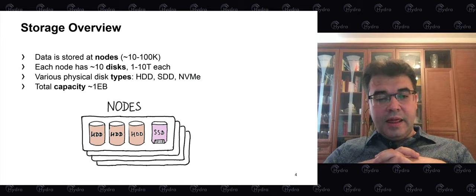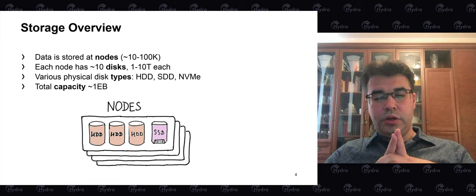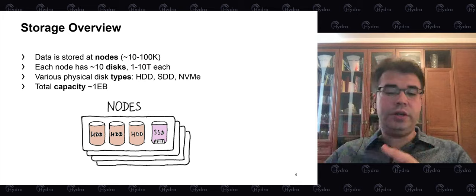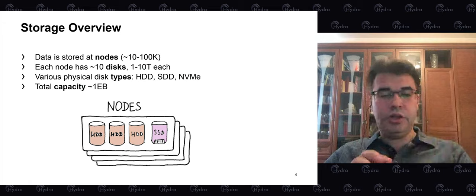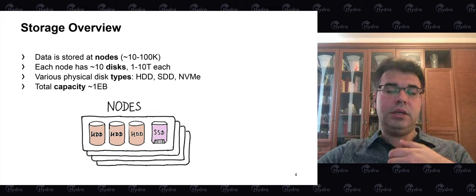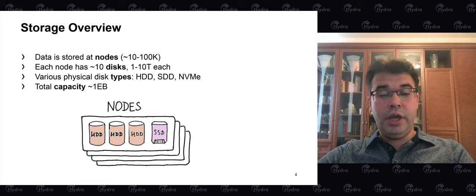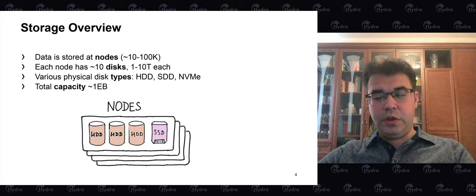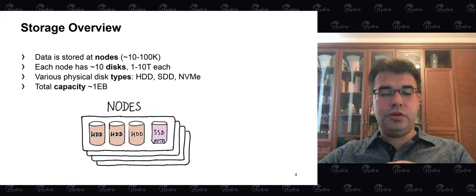Our high-level design is pretty standard. Data is stored in the cluster, which consists of nodes — server machines with a number of disk drives attached. Typically we have about 10 drives per node, each ranging from 1 to 10 terabytes in capacity. In YT we have HDDs, SSDs, and NVMe drives, and clients can choose which storage medium they need. Our largest production clusters have total disk capacities of roughly an exabyte.